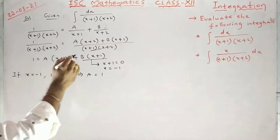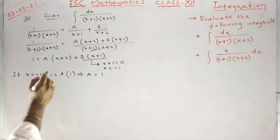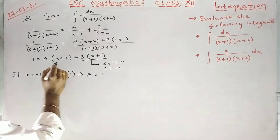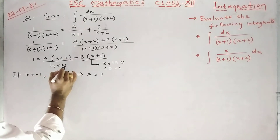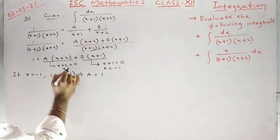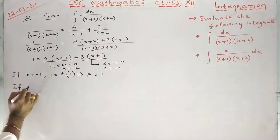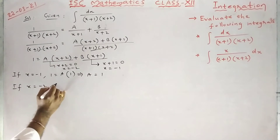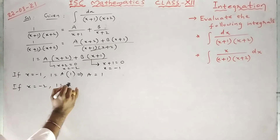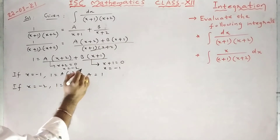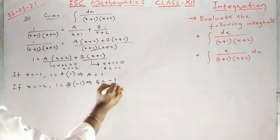To get the value of B, we make x+2 equal to 0, so x = −2. If x = −2, we get 1 = B(−2+1) = B×(−1), so B = −1.